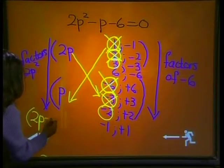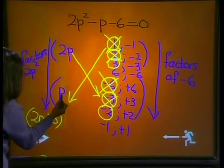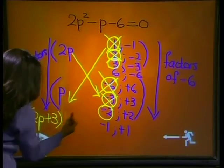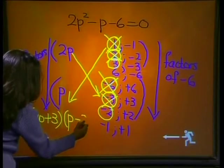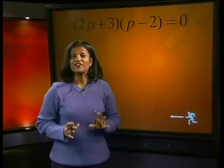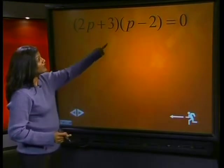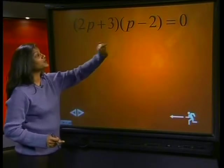2p + 3, which you're reading 2p + 3 coming from here, and p - 2 coming from there. p - 2. So these are our correct factors. Right. We have factorized the trinomial. So now we can say that (2p + 3)(p - 2) = 0.